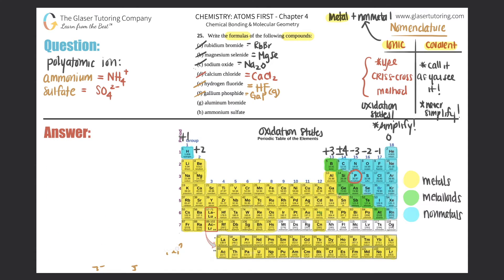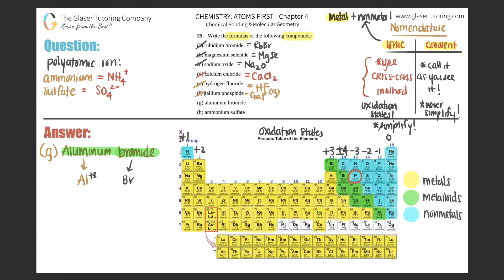Part (g): aluminum bromide. Aluminum is a metal, so it's automatically ionic. Aluminum is Al and it's in the +3 charge group. Bromide comes from bromine, Br, which is -1. The +3 crisscrosses telling me I need three bromines; the 1 crisscrosses telling me I need one aluminum. I see a 1 — it's already the empirical formula. So the answer is AlBr₃.